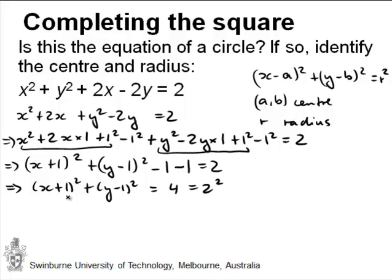So now we have our equation in the form that we wanted it to be in. And we have the center as minus 1 and 1, and the radius as r equals 2. So here we go. It's a circle and we have the center and the radius.